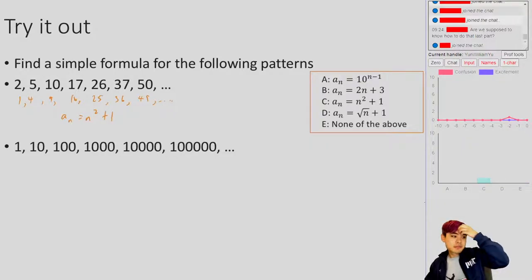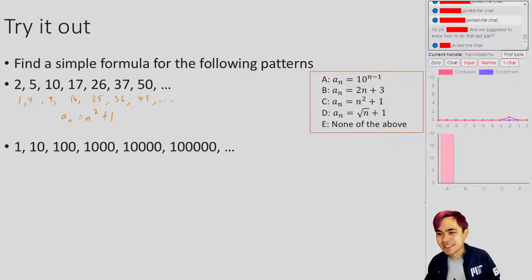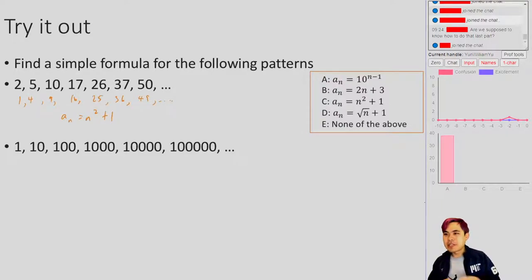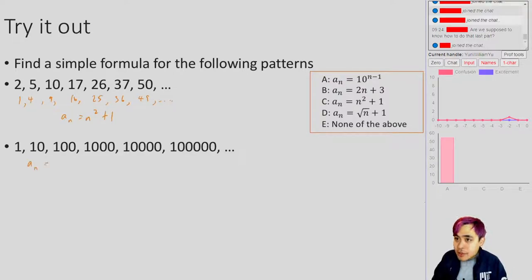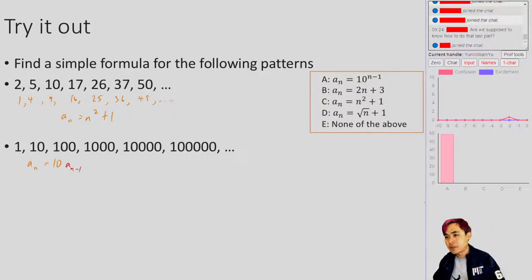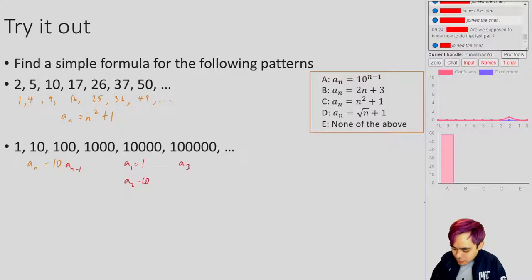What about this one: 1, 10, 100, 1,000, 10,000, 100,000? One thing you might notice is that each one is 10 times the previous one, so a_n is equal to 10 times a_(n-1). Because a_1 is equal to 1, a_2 is equal to 10, a_3 is equal to 100, a_4 is equal to 1,000, and so on. You'll notice that this is just the formula a_n is equal to 10 to the n minus 1.